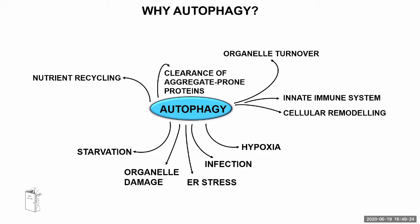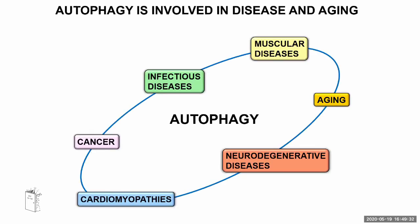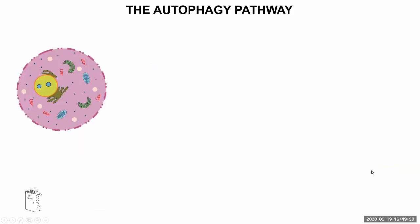Considering how many processes autophagy is regulating, we shouldn't be surprised that impaired autophagy is actually involved in many important diseases such as muscular diseases, infectious diseases, cancer, cardiomyopathies, neurodegenerative diseases, and also aging. So how does autophagy work — how do our cells carry out autophagy?